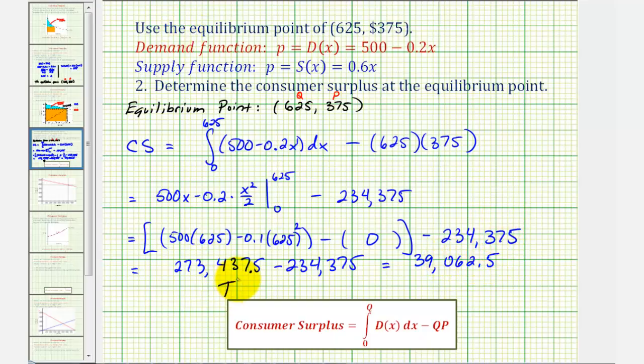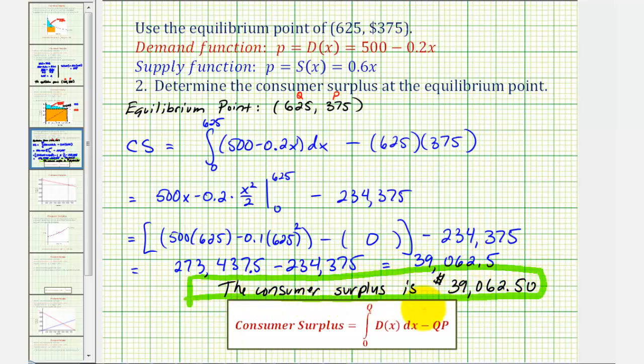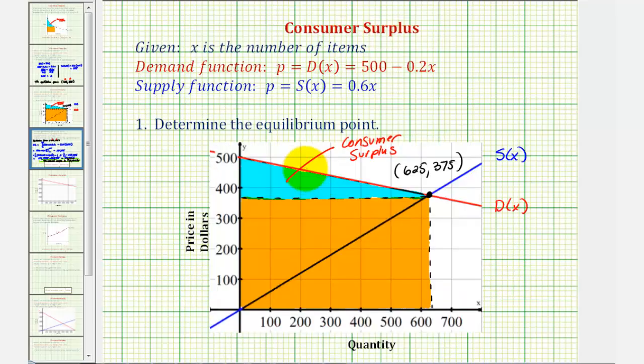Which means the consumer surplus is 39,062 dollars and 50 cents. Which also would be the area of this region here, and represents the utility or pleasure received by the consumers purchasing this product.